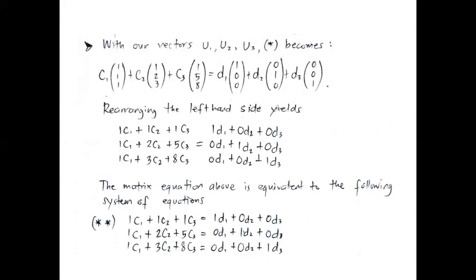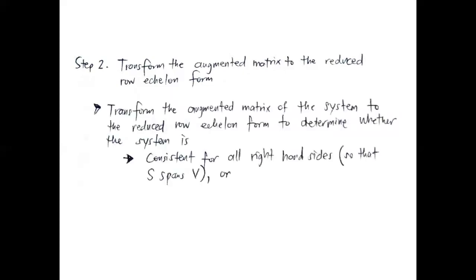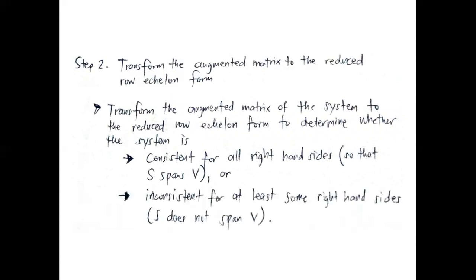The second equation: 1·c sub 1 plus 2·c sub 2 plus 5·c sub 3 equals 0·c sub 1 plus 1·c sub 2 plus 0·c sub 3. The third: 1·c sub 1 plus 3·c sub 2 plus 8·c sub 3 equals 0·c sub 1 plus 0·c sub 2 plus 1·c sub 3. Step 2: let us transform the augmented matrix to the reduced row echelon form to determine whether the system is consistent for all right-hand sides so that S spans V, or inconsistent for at least some right-hand sides so that S does not span V. Here is our augmented matrix with the identity placed in the right portion.